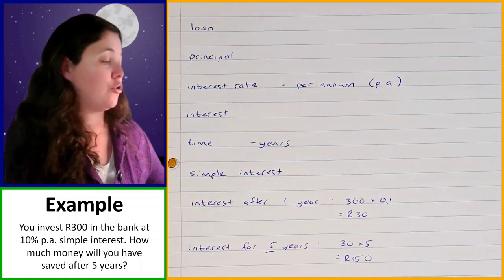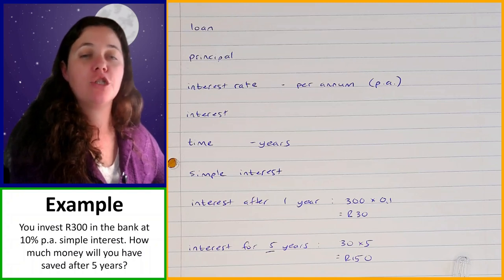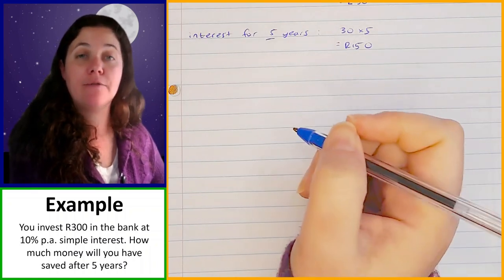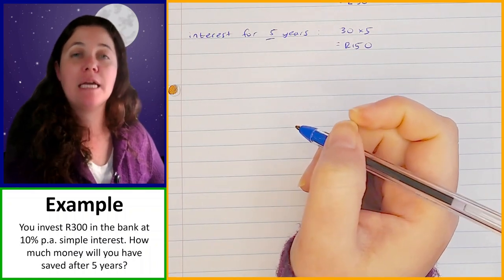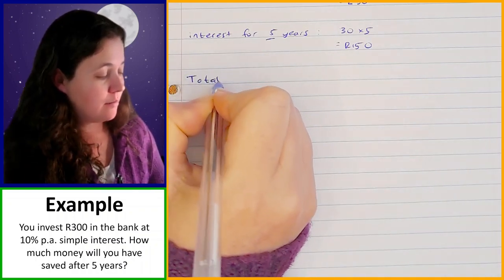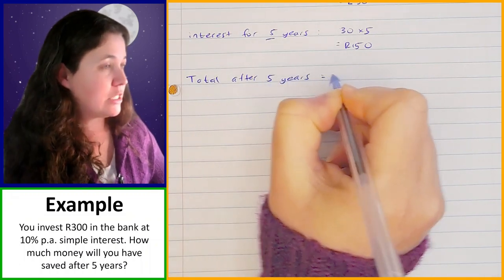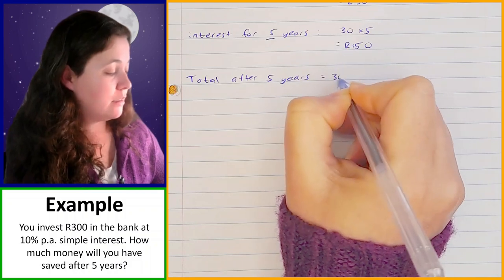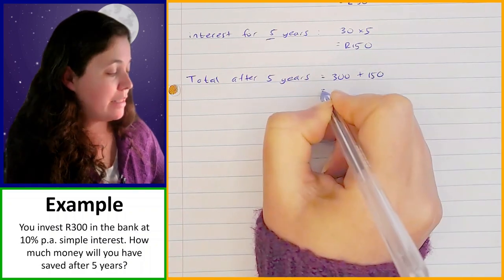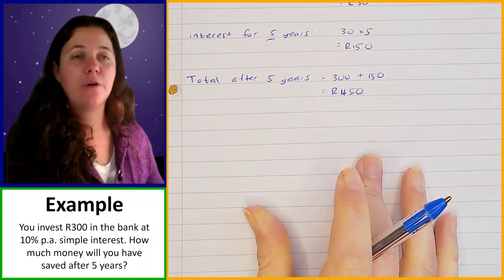Now we know how much interest you're going to earn altogether for five years, but that hasn't answered the question yet. The question is how much money will you have saved? The amount of money that you save includes the amount you invested in the first place. So the total after five years is the amount you invested plus the interest for five years, which gives you a total of 450 rand.